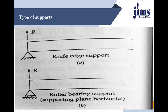In a simply supported condition, the beam or member can freely move in the horizontal direction. But at the point of connection between the member and the support, there is no movement in the vertical direction because the support provides a reaction in the vertical direction. So vertical deflection is zero.